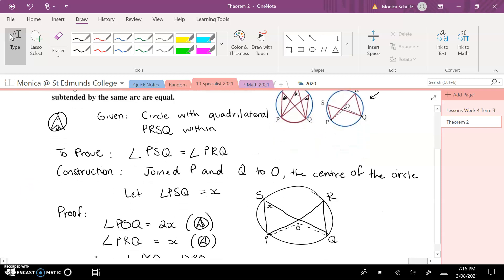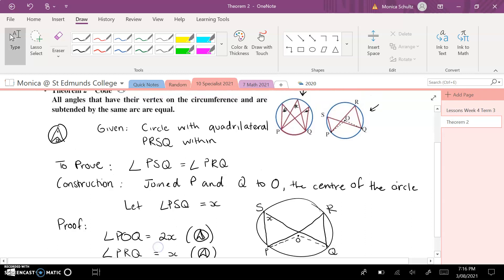And we want to prove that angle PSQ is equal to angle PRQ. The construction phase is that we would join P and Q to O, the centre of the circle, and we want to let the angle PSQ equal X.